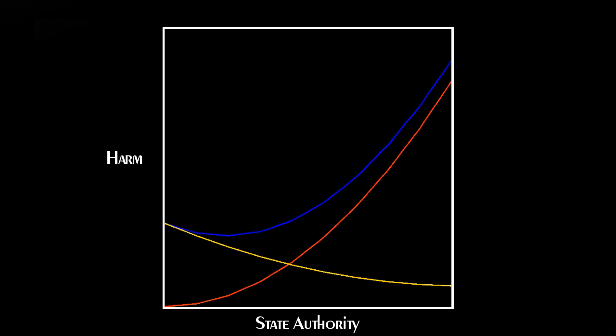Now we'll add a third line that's the sum of the first two. The total harm done to people by the state and by each other. And it's immediately obvious that the sweet spot is a state with the minimum authority required to prevent the worst that people would do to each other, but without the authority to do significant harm to the people itself.